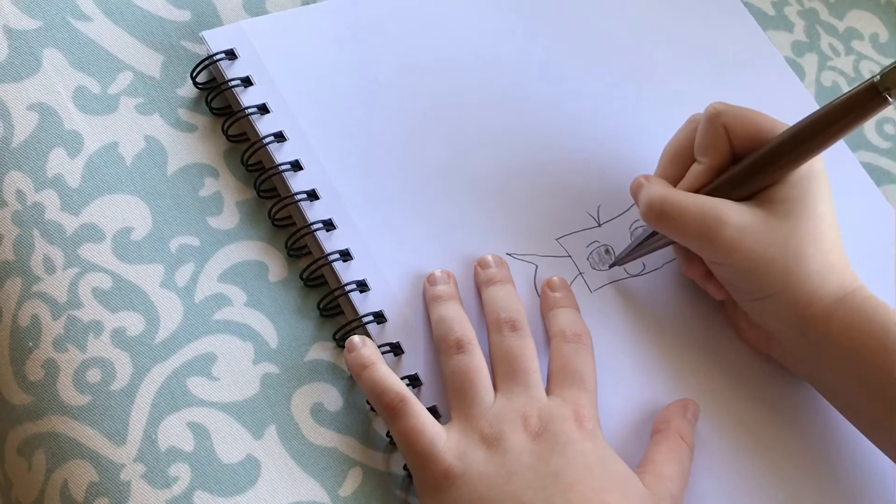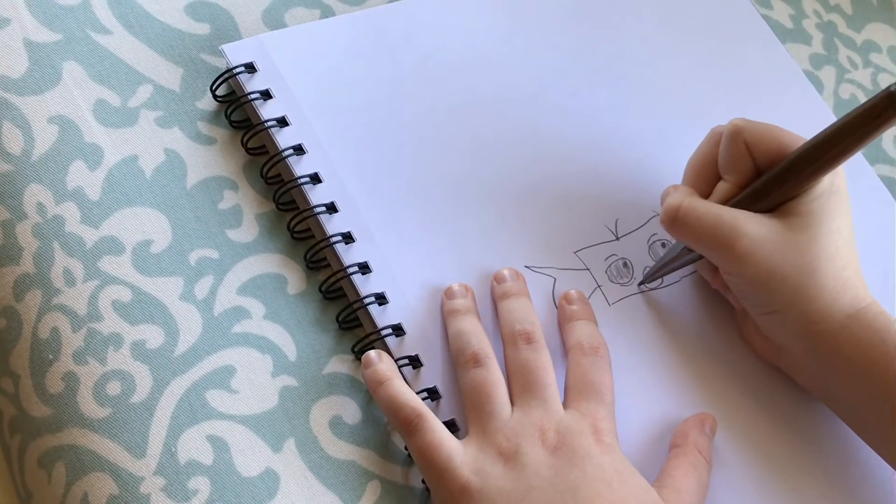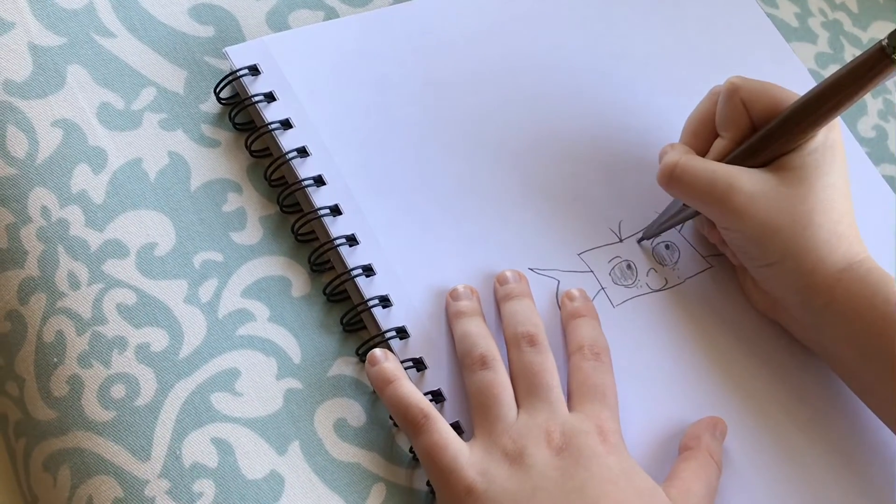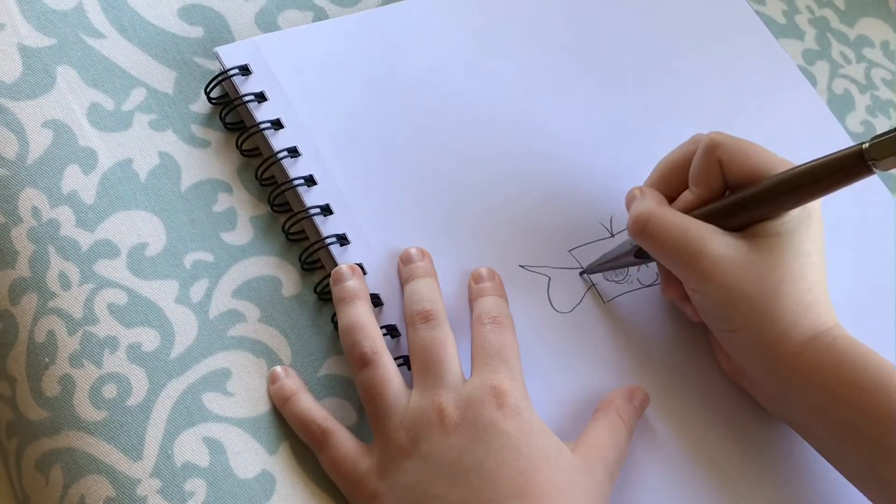And you can add little under eye things. And you're going to add little freckles. And you can even add some up here. And then you're going to add this.